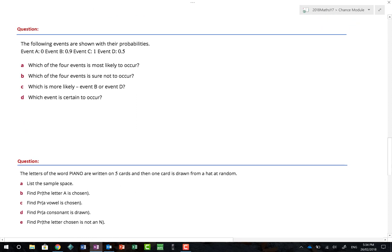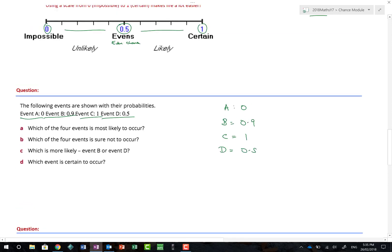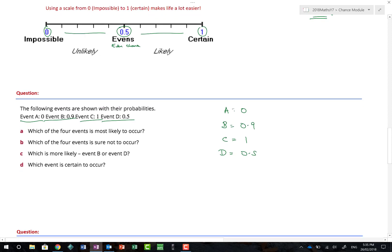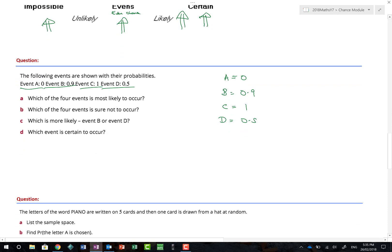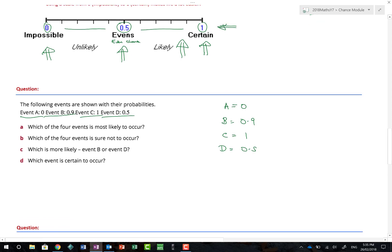What a great couple of questions we have here. These questions have come from the Cambridge Essentials textbook series. There is no wish for me to actually infringe copyright. I just thought there were some really good questions. The following events are shown with their probabilities. We have event A has a probability of 0. Event B has a probability of 0.9. Event C has a probability of 1. And event D has a probability of 0.5. So if we go back to my little diagram here, A has a probability of 0. B is 0.9, which is sort of more up here. C has 1. And D is here. Which of the four events is most likely to occur? The one that is most likely to occur has to be the one that is closest to the number 1. As it can include the number 1, that to me would suggest that C is my correct answer. Because you can't be any more certain than certain.